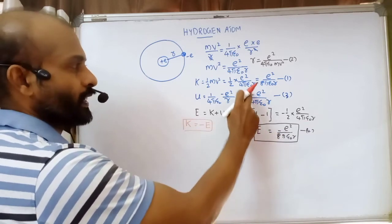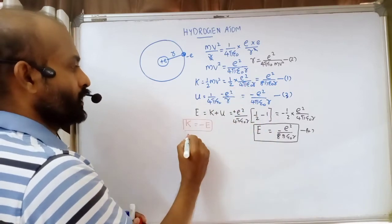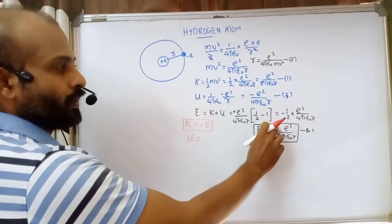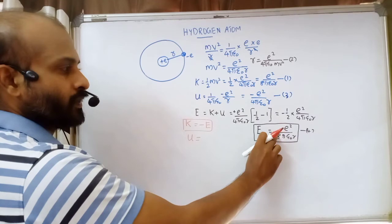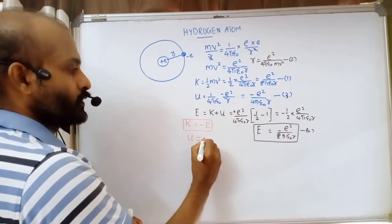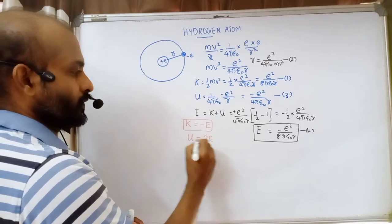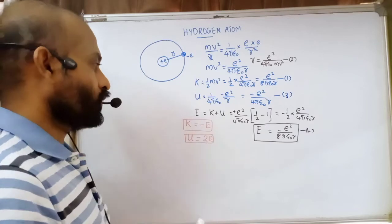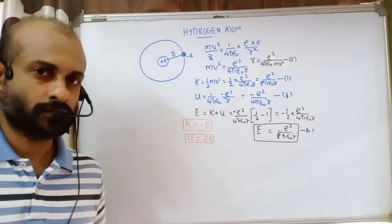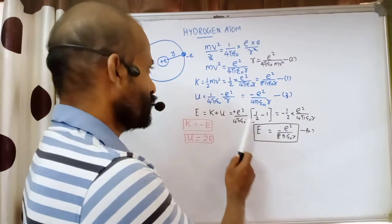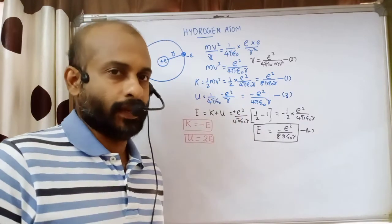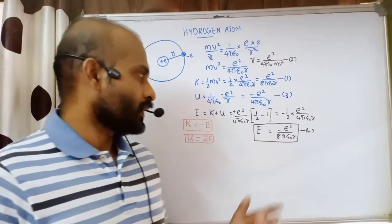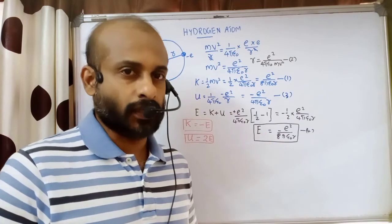We can summarize: kinetic energy equals the negative of total energy. For potential energy, multiplying the total energy equation by two gives the potential energy value. So potential energy equals two times the total energy, and the negative of total energy gives kinetic energy. We now have equations for total energy, kinetic energy, and potential energy.